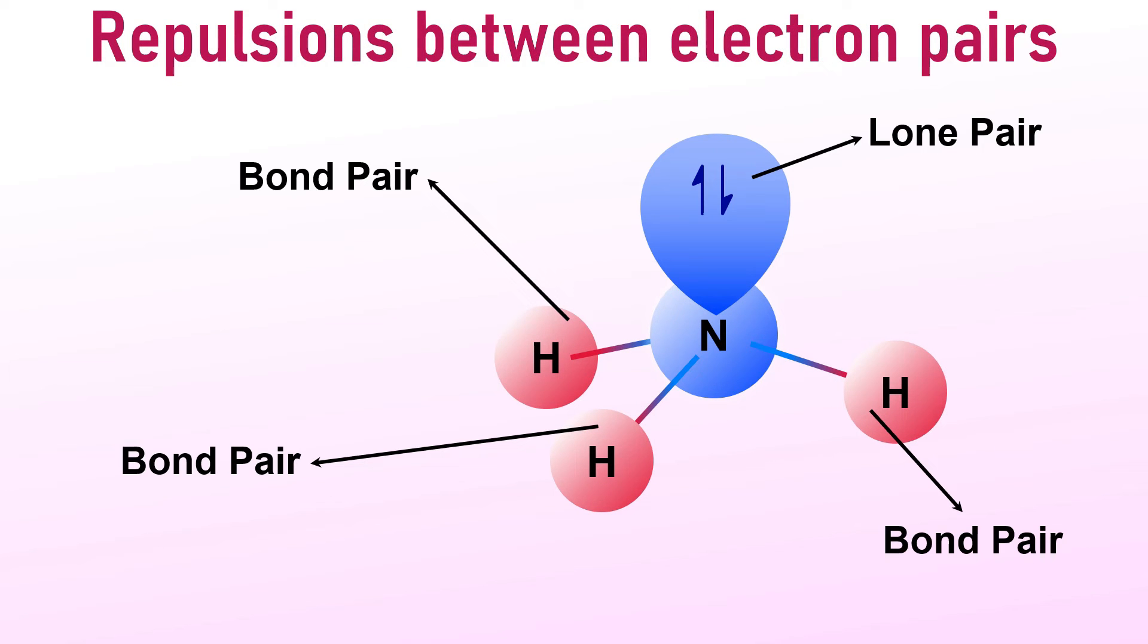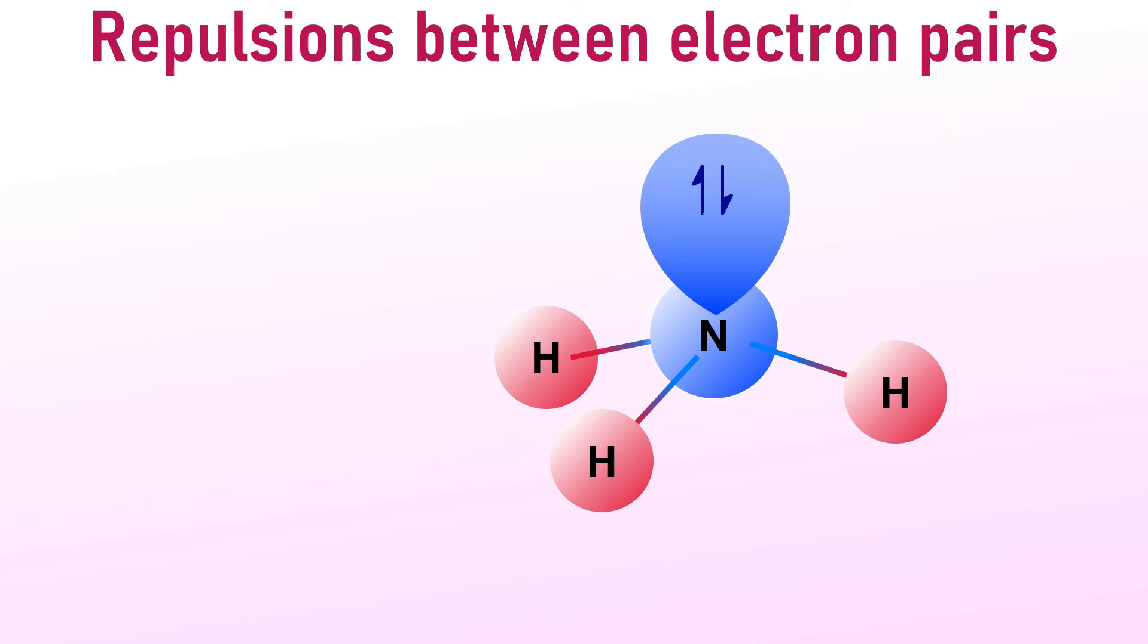For clarity, we represent bond pairs with lines instead of using orbital diagrams. Due to stronger repulsion between lone pairs and bond pairs compared to bond pair-bond pair repulsions, the bonds are slightly pushed away from the lone pair.